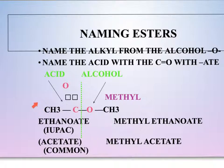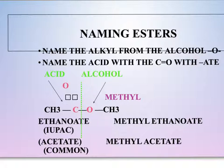Here we have an ester drawn out. My PowerPoint does not allow me to do double bonds, so the boxes are showing that double bond attached to the oxygen. This section is the acid portion, and this portion is the alcohol portion. We name the alcohol portion first, acid second — single bond first, double bond second. We name this chain with a YL ending: there's one carbon, so we call it methyl. Then we name this chain — two carbons, that's the prefix for eth. We would name that ethane, drop the E, and add an OATE ending. So we call this methyl ethanate.